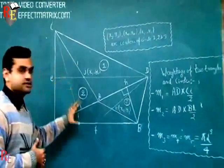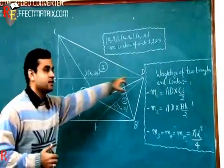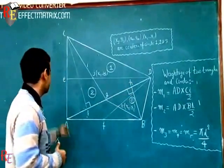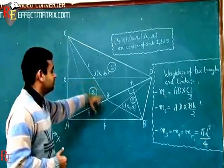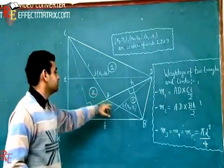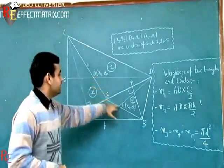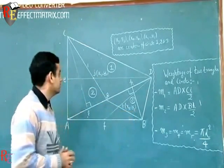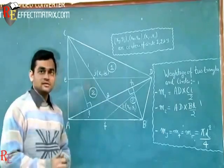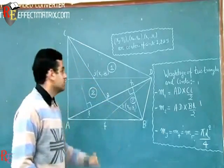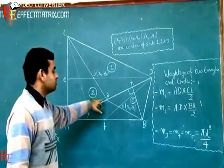In the geometrical method, we first divide the block into two triangles by drawing a diagonal along AD. This gives us two triangles: ACD and ABD. We then find the centroid for each triangle — the centroids are J and K. J has coordinates (x1, y1) and K has coordinates (x2, y2). The block also has three holes with coordinates to be determined.